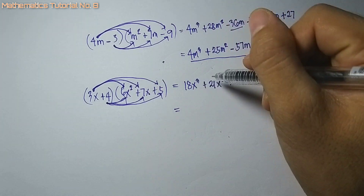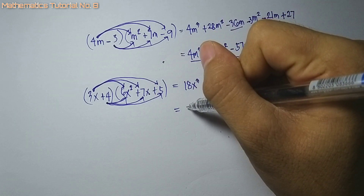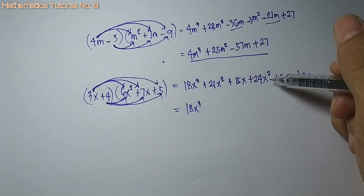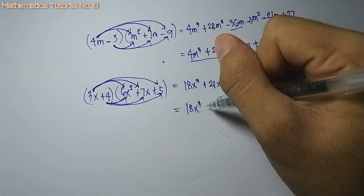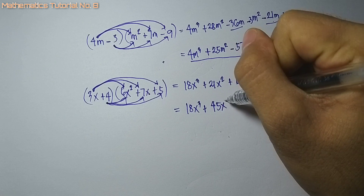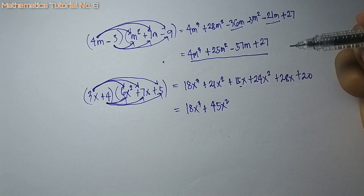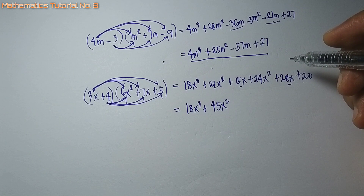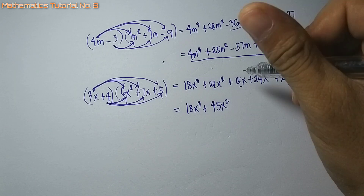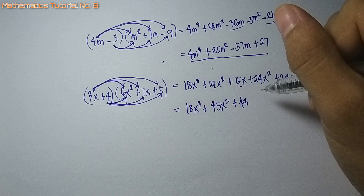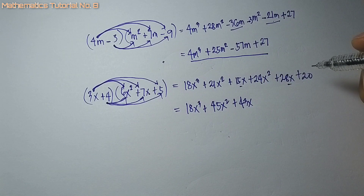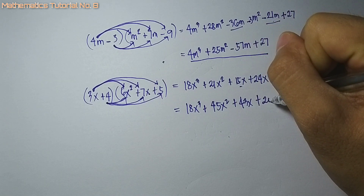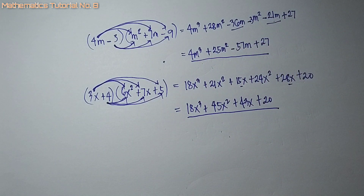Pagka makuha na ang lahat, i-add ang similar terms. Walay kaubandiri ang x cubed so kopyahon: 18x cubed. X squared: 21x squared plus 24x squared, that is 45x squared. X terms: 15x plus 28x, that is 43x. Nabilin si positive 20 — wala kapareha, so plus 20. Answer: 18x cubed plus 45x squared plus 43x plus 20.